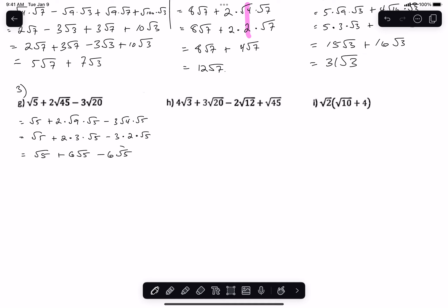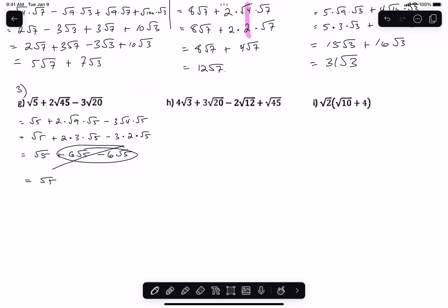These cancel out, and you're just left with 1 root 5. Okay, next question.